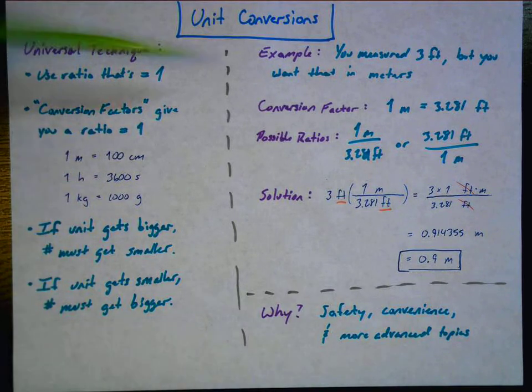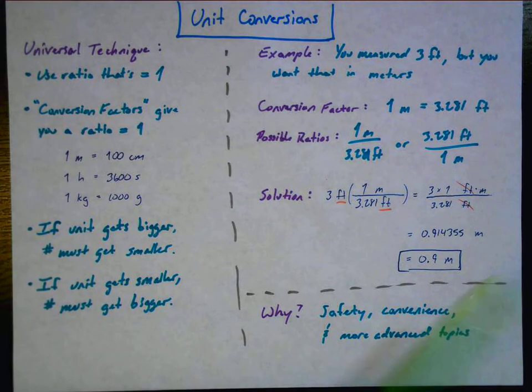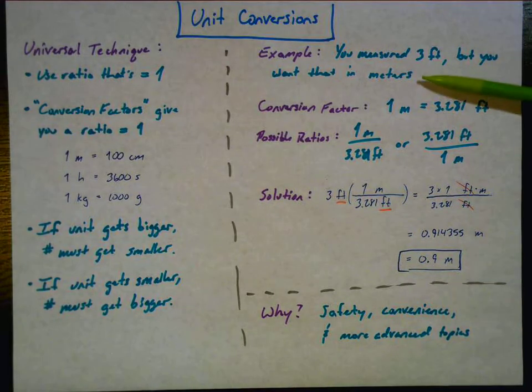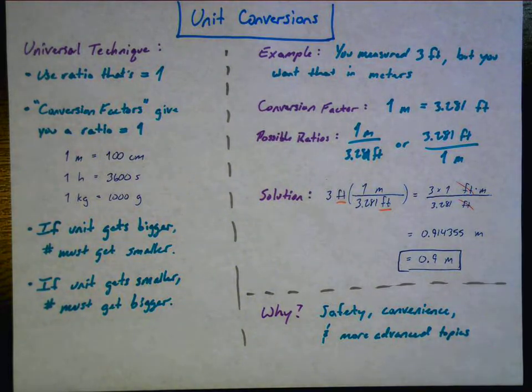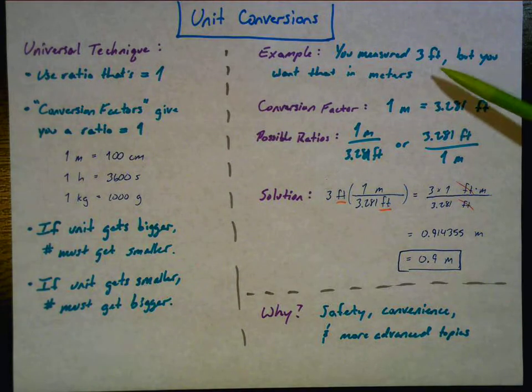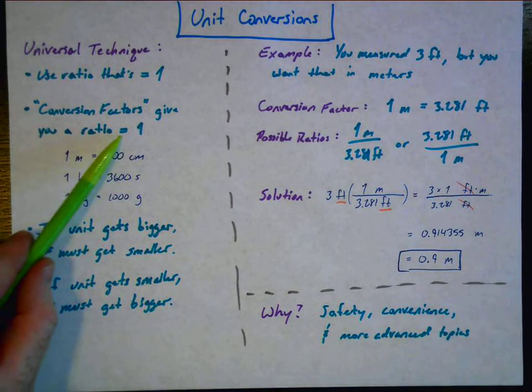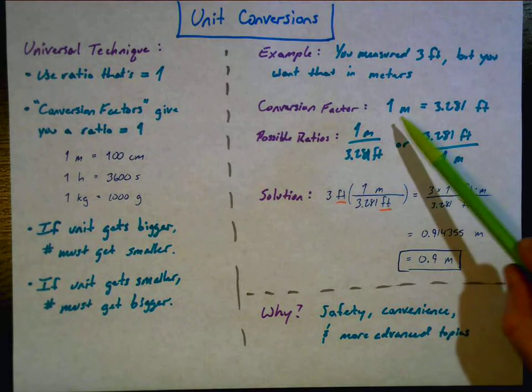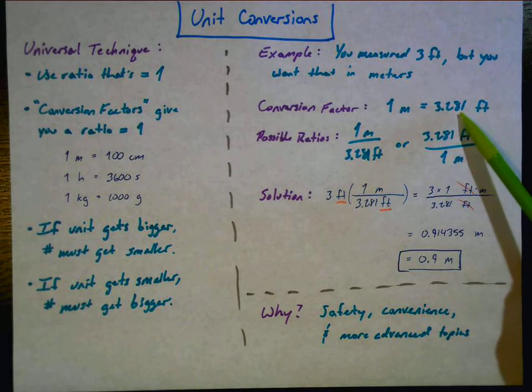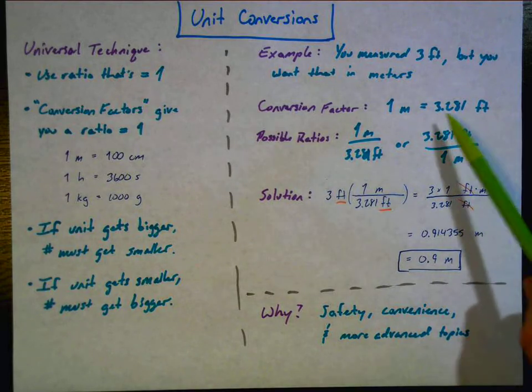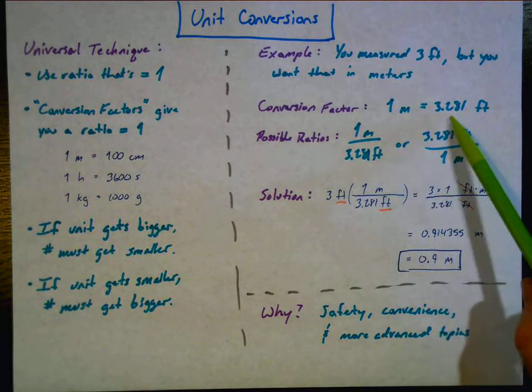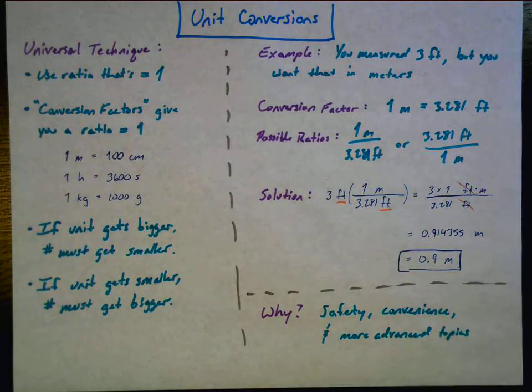Let's look at this example right here. So you measured a distance of three feet, but you want that in meters. And that could be for any number of reasons. Maybe your teacher's being a pain, but maybe you realize, hey, the rest of my team is working in the metric system, and I did this in feet. I have to have this in meters. So we're going to use a conversion factor because that gives us a ratio equal to one. The conversion factor we will use, we could look this up, one meter is equal to 3.281 feet. Notice right away, there's a difference in the number of sig figs in these two numbers. That might come up later.